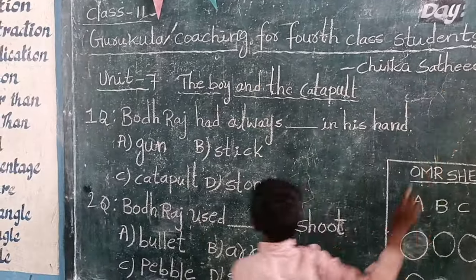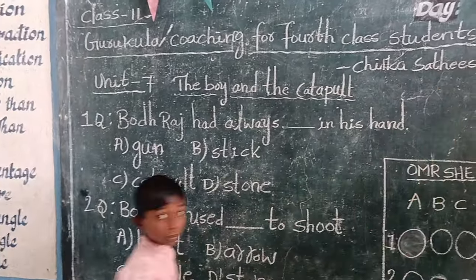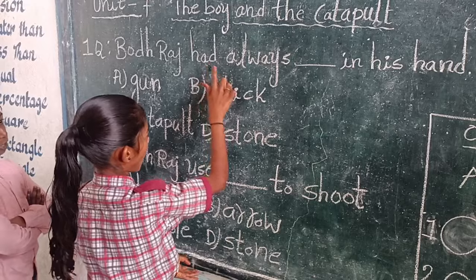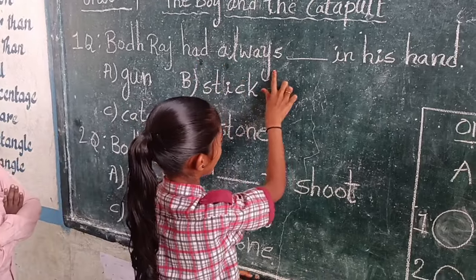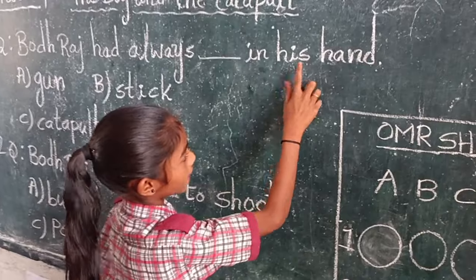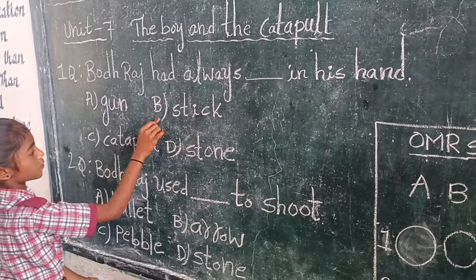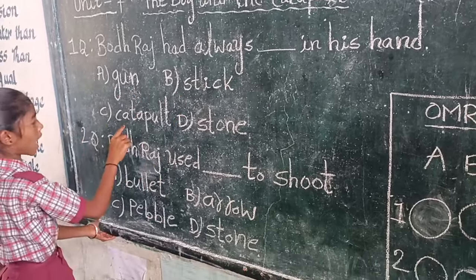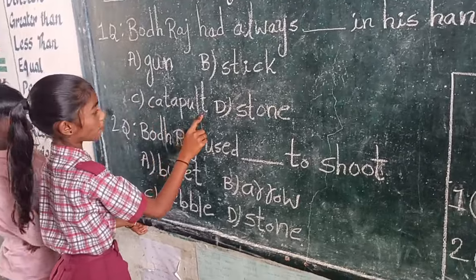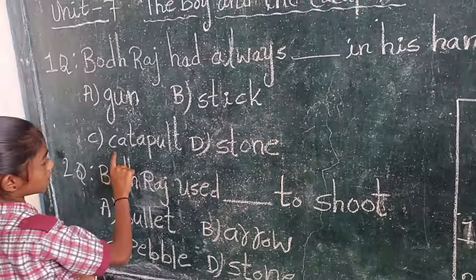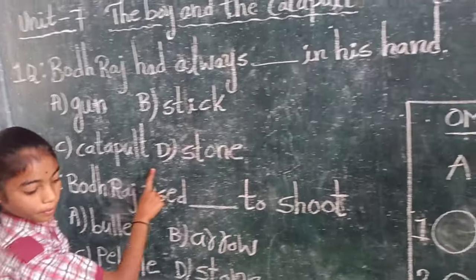4th class students, S.R.K.S.A.T.U.S.A.T. Unit 7, D.A.B.A.R.I.N.D.A. K.A.T.A.P.O.L. Do bubbling in OMR sheet?